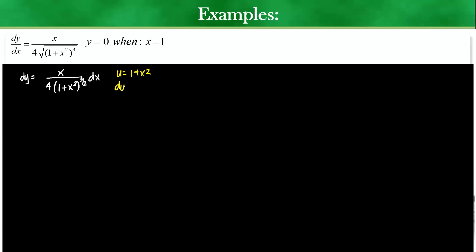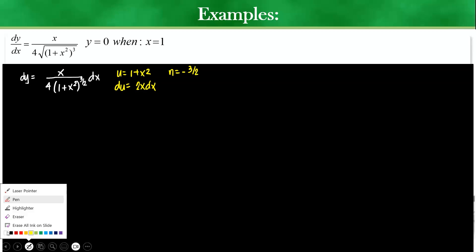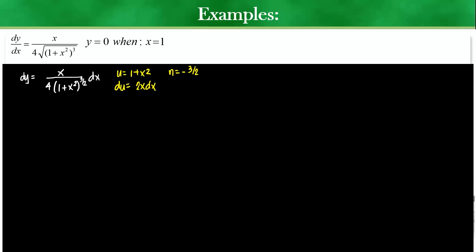You can say that the du would then be 2x dx with an n of negative 3 halves. What am I missing? And what do I not need? I'm missing the one half because I need a 2 here. So here maybe what we can do is let's rewrite this even further because in order to solve this, you know that we have to integrate, right?